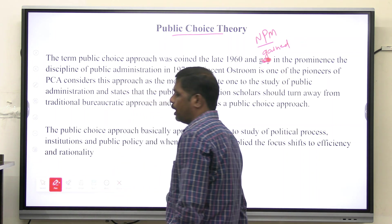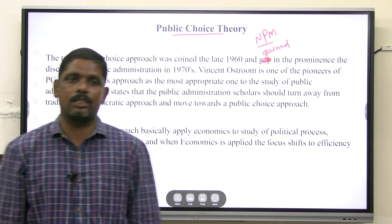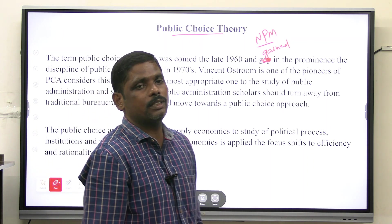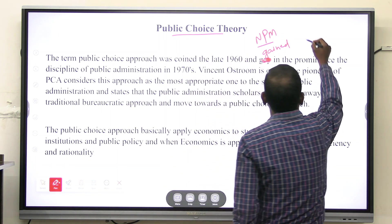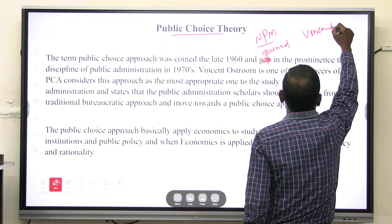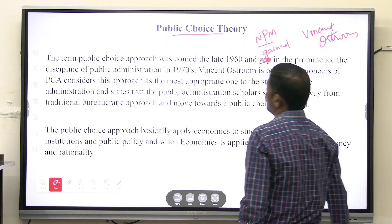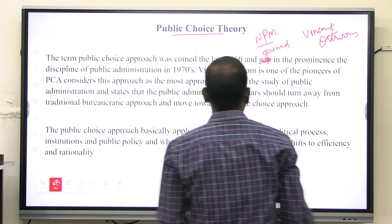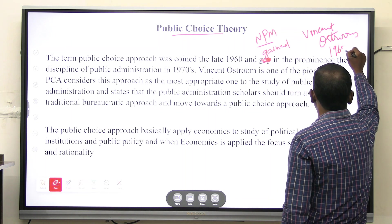If you take public choice theory as a concept, it has emerged in the 1960s. It was coined by Vincent Ostrom — it is Vincent Ostrom who coined the term public choice theory — in 1968.